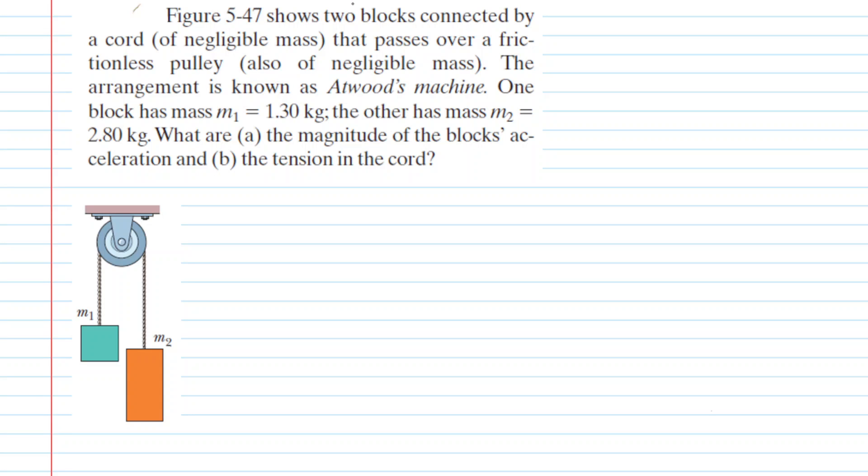The first thing we might want to do in solving this question is decide in which direction each block is accelerating, and that is going to be based upon the masses. Block 1 has a mass of 1.3 kilograms and block 2, 2.8 kilograms. Of course, because block 2 is more massive, it's going to win this tug-of-war between the blocks.